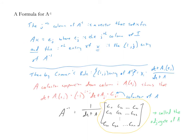Cramer's Rule also gives us a new way — a formula — for finding A inverse that doesn't involve row operations, which is a cool and useful application of Cramer's Rule.